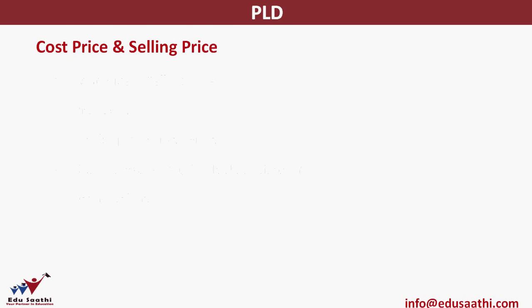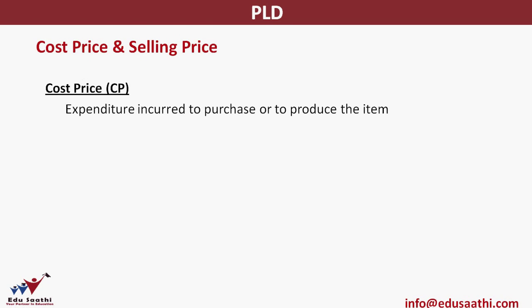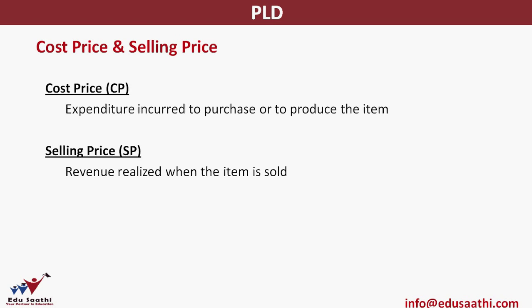Let's get started and talk about cost price and selling price. Cost price is basically the price or the expenditure incurred to produce or purchase the item. If you are a manufacturer you will be producing it; if you are a wholesaler or a retailer you will be purchasing it from someone. The price at which you have purchased an item is your cost price. Selling price is the price at which the same item is sold, or the revenue which is realized when that item is sold.